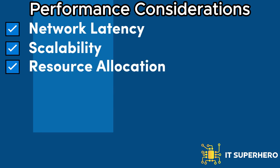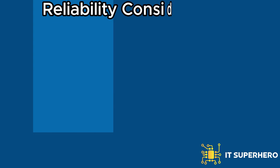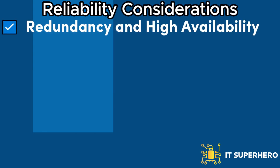Resource allocation: effectively allocating computing resources such as CPU, memory, and storage is crucial to avoid performance bottlenecks, and cloud providers offer various options for resource allocation and optimization. Data storage and retrieval performance can significantly impact application performance; utilizing appropriate storage options, caching mechanisms, and optimized data retrieval techniques is important. Redundancy and high availability: cloud providers typically offer redundancy and high availability features to ensure that applications and data are accessible even in the event of hardware failures or disruptions.